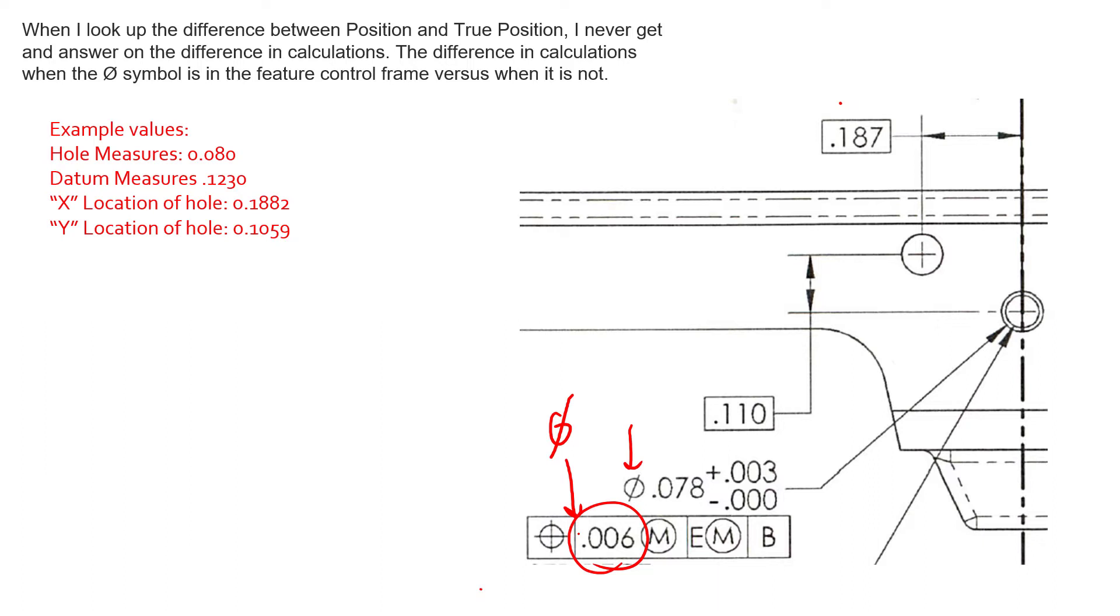Now there are unique scenarios where we might drop off that diameter symbol to control the location of an axis in a very different way, but the dimensioning scheme is going to look very different. More than likely, what we have happening here is simply a typo missing from that diameter symbol.